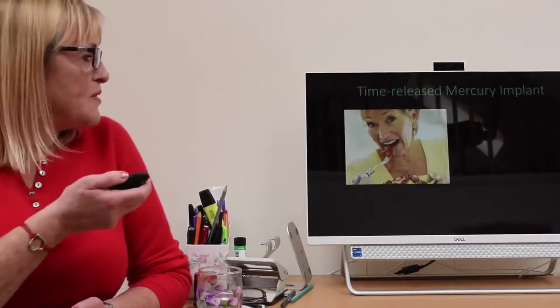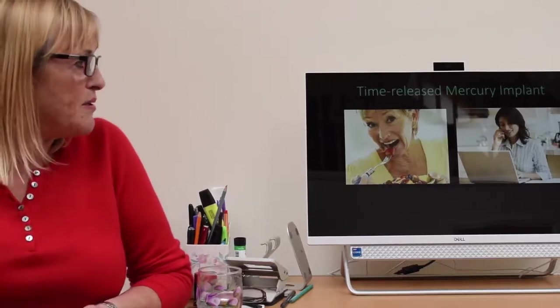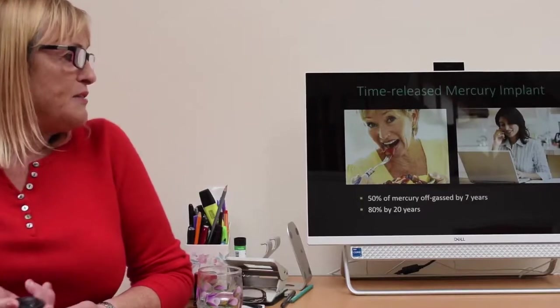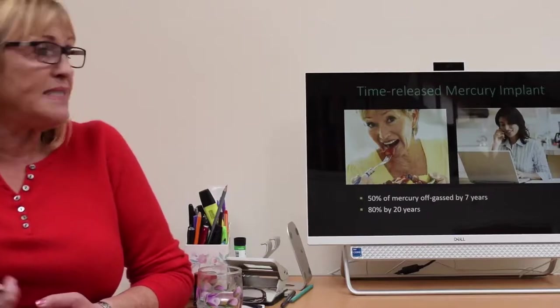What amalgam fillings are basically are time release mercury implants. This depends on how many hot drinks you have, how abrasive the food you chew is, how often you eat, whether you chew gum, how exposed you are to electromagnetic radiation, using mobile phones and laptops, things like that. 50% of mercury is off-gassed out of amalgam filling by 7 years and 80% by 20 years.